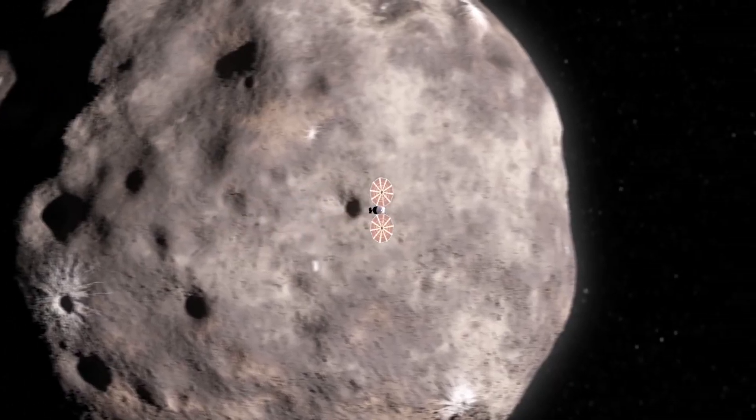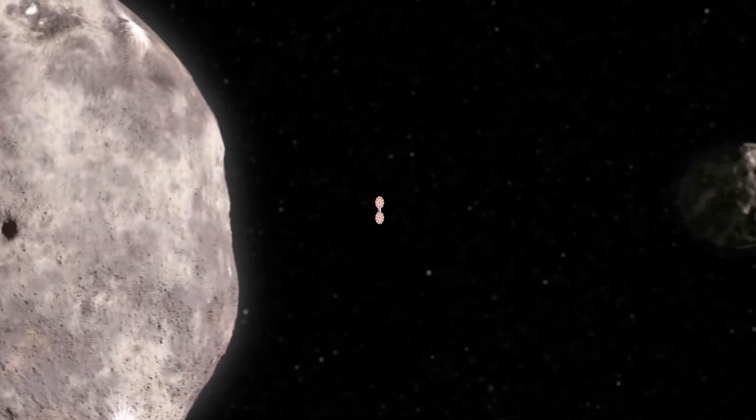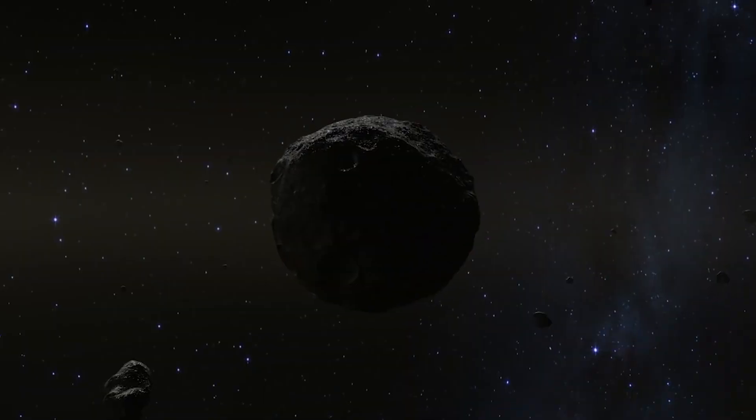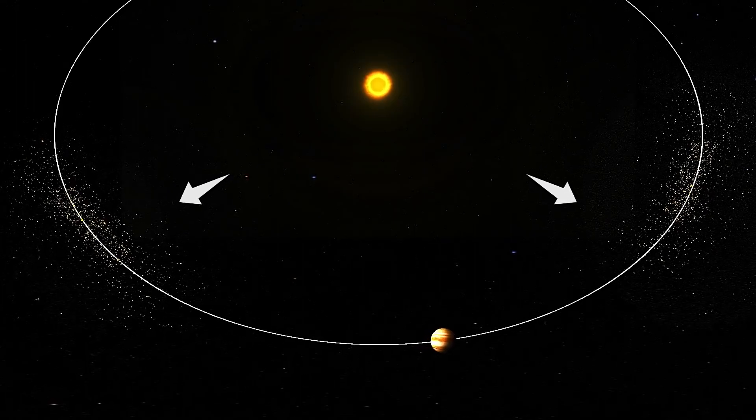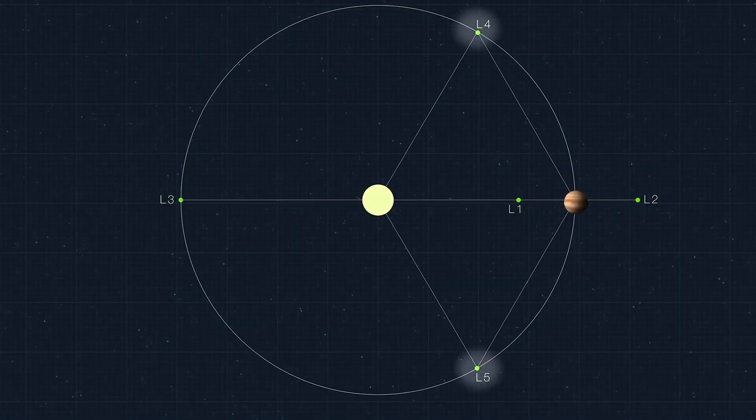NASA's Lucy mission will study the pristine Trojan asteroids, the remnants of our solar system that have been gravitationally trapped around Jupiter's Lagrange point number 4 and Lagrange point number 5 for over 4 and a half billion years.